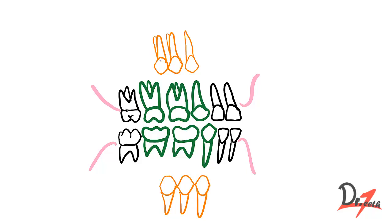Assalamu alaikum, today we are going to study about leeway space of Nance. There is a time in our life when our deciduous teeth are going to be replaced by the permanent teeth. So in this case, the deciduous canine and the deciduous molar are going to be replaced by the permanent canine and the premolars.